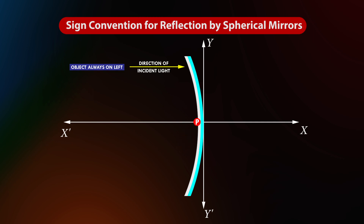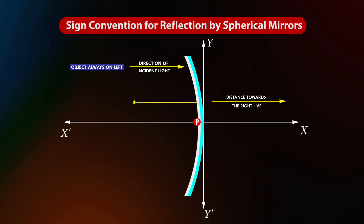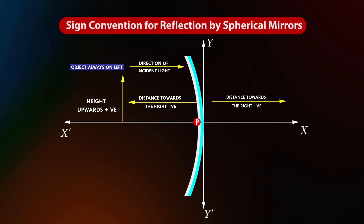Direction of measurement: All distances measured to the right of the origin along the positive x-axis are considered positive, while those measured to the left along the negative x-axis are considered negative. This helps in determining the position of the object and image relative to the mirror. Distances measured perpendicular to and above the principal axis along the positive y-axis are considered positive.